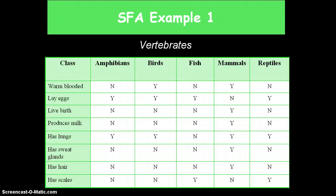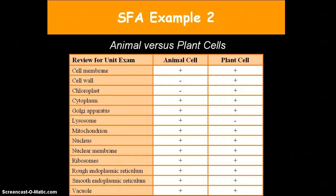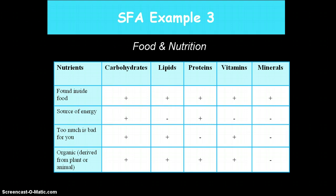Take a look at Example 1. It shows vertebrates by classes, and students indicate whether the feature is associated with that particular class. In Example 2, students reviewed the characteristics of animal and plant cells using Semantic Feature Analysis. In Example 3, the topic is food and nutrition, so students determine which properties are found in the five nutrients listed.